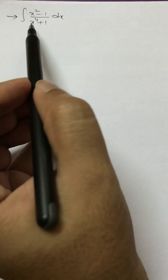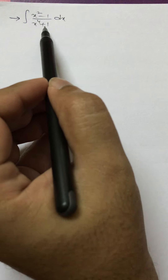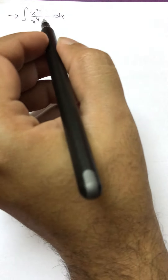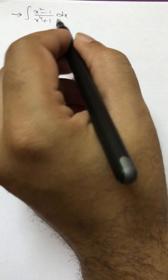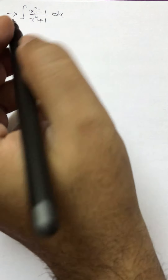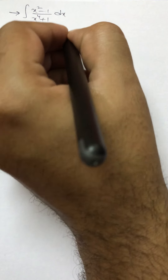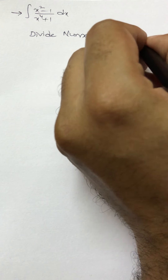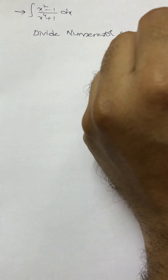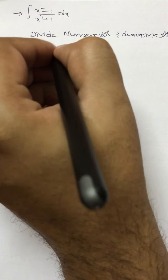We will solve integral (x² - 1)/(x⁴ + 1) dx. For this, what we do is we will divide numerator and denominator by x².